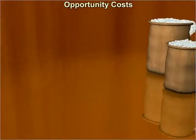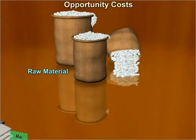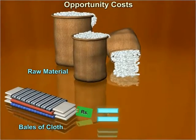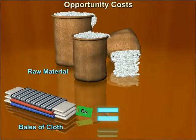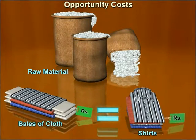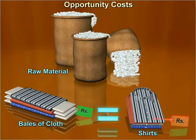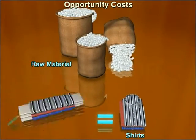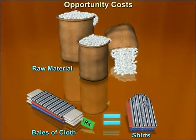The opportunity cost of an activity is equal to the value of the next best alternative foregone. It is the amount of other goods that has been given up in order to produce that commodity.